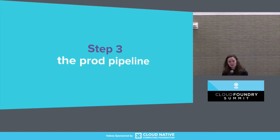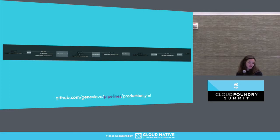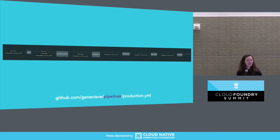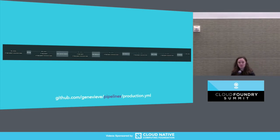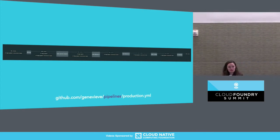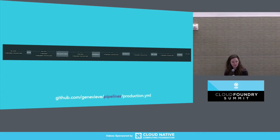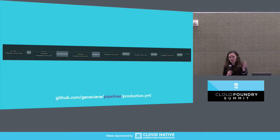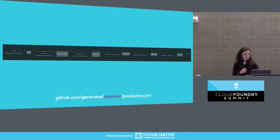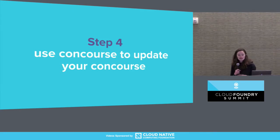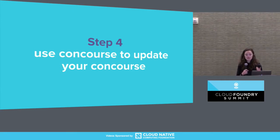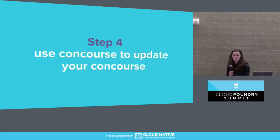So now we have another pipeline: your production pipeline. This one is actually so similar to staging that I didn't even run it because the staging one went green, so it was fine by me. The really cool thing about these pipelines is that you can pull down all of the latest releases, stemcell fixes, or vulnerability fixes and automatically roll those out to your environments. And finally, the last step is to use Concourse to update Concourse.